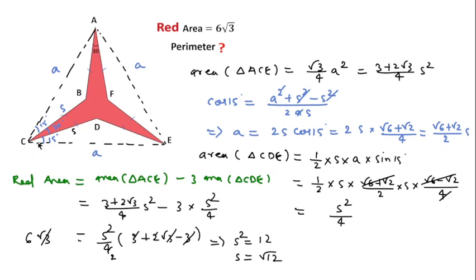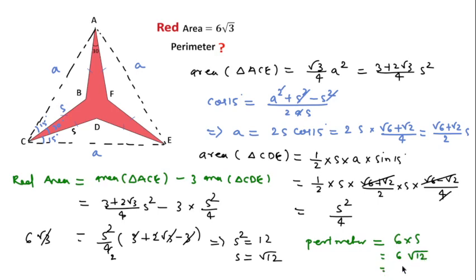The perimeter equals the number of sides times S. There are 6 sides, so perimeter = 6·S = 6·√12 = 12√3. This is the answer for this question. Thanks for watching this video — please like, share, and subscribe to this channel.